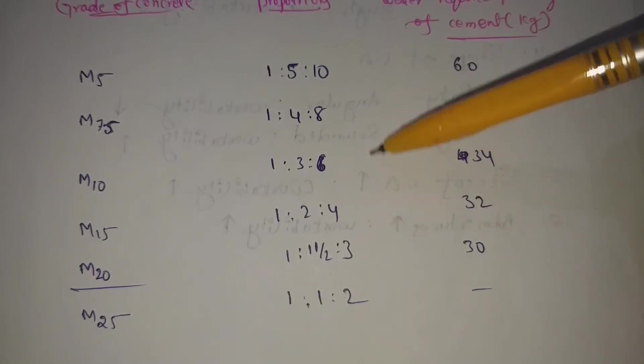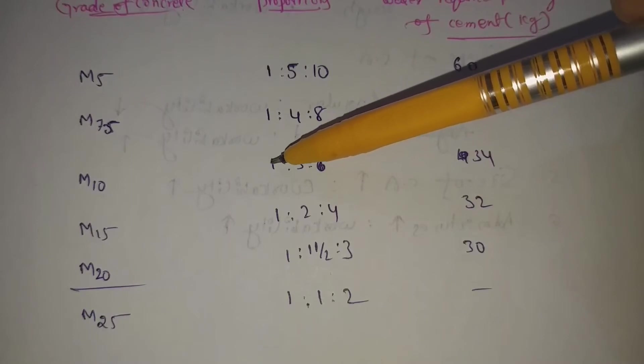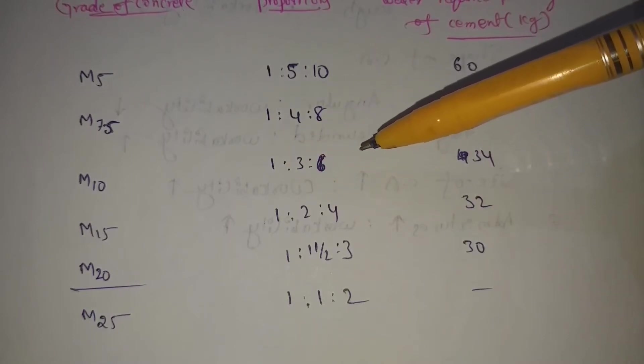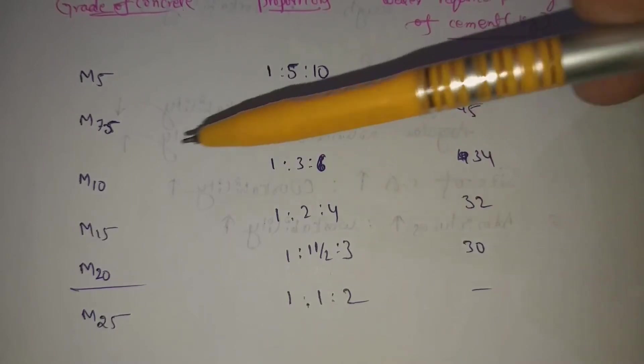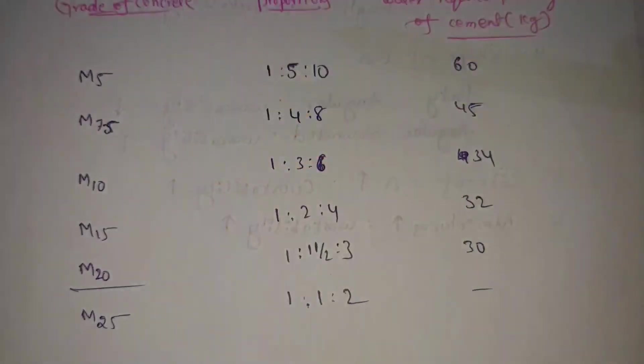This value is 10. Next, we will add 1 to 3 to 6. So, M10 will be easy. So, here we have this trick. Here we have 3 types of concrete mix.